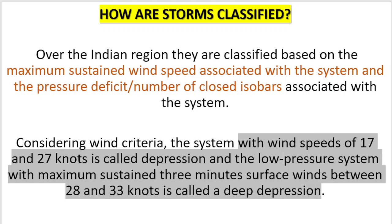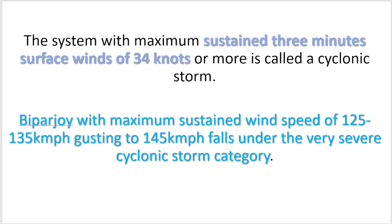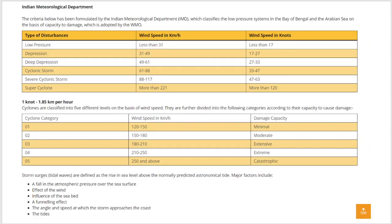If the 3-minute surface wind sustains at 28 to 33 knots, it is called a deep depression. If the wind speed is more than 33 or 34 knots, we call it a cyclonic storm. And if the wind speed is 125 to 135 km/h, it falls under the very severe cyclonic storm category. Biparjoy is classified as a very severe cyclonic storm.